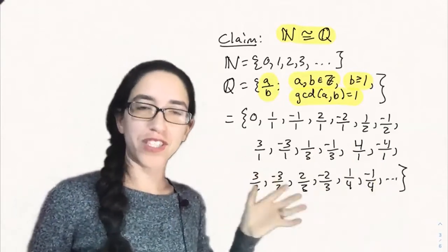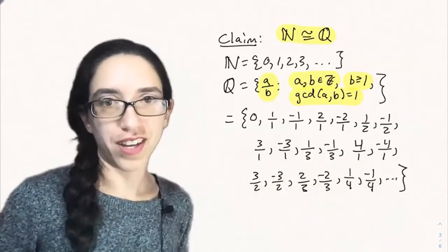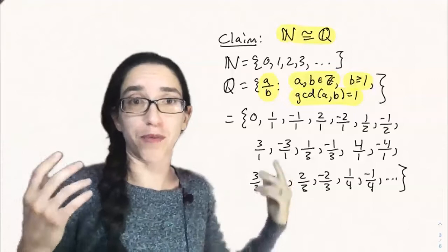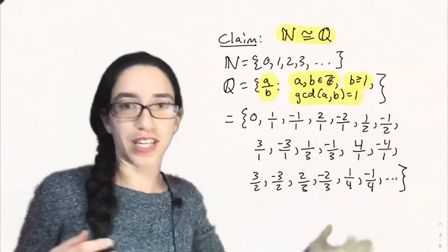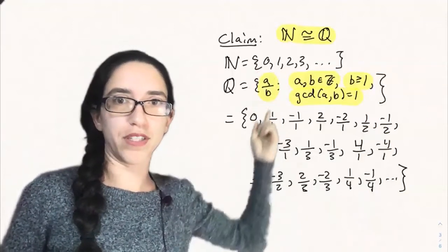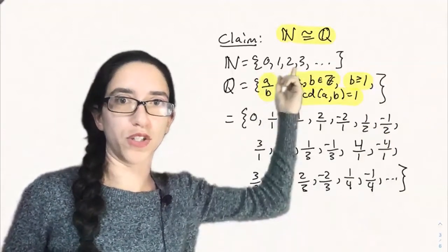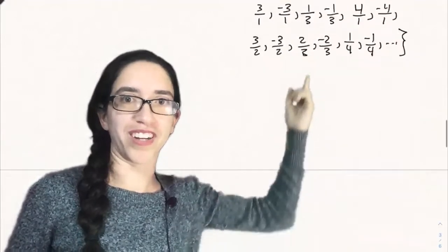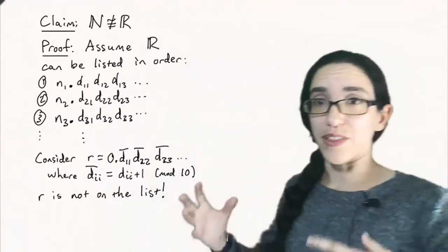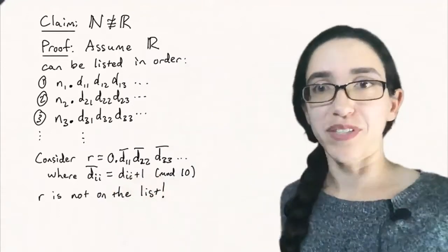Notice that every single rational number is on this list. We didn't miss any because every rational number has sum of its numerator and denominator. And so it eventually is reached by this list. So then we can make the bijection where 0 maps to 0 and 1 maps to 1 over 1 and 2 maps to minus 1 over 1 and so on because we listed them in order. So the natural numbers and the rationals have exactly the same size.